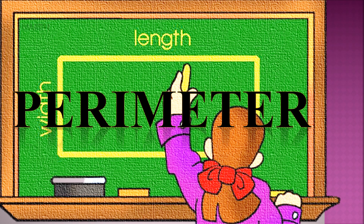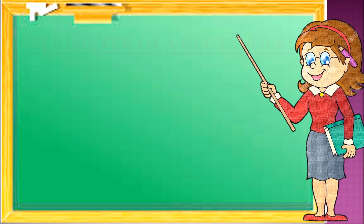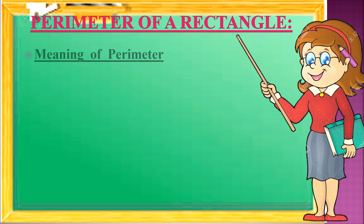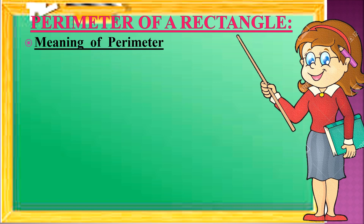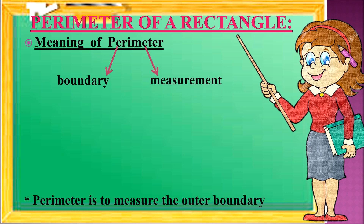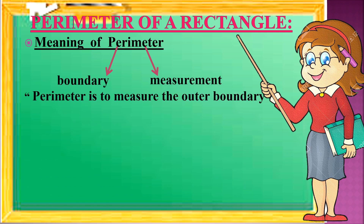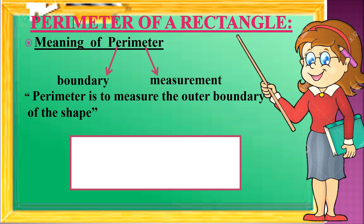Let's start with perimeter. I will tell you the meaning of perimeter. 'Peri' means boundary and 'meter' means measurement. So the definition is: perimeter is to measure the outer boundary of a shape.